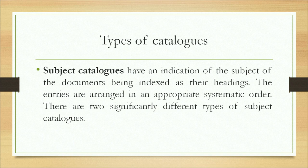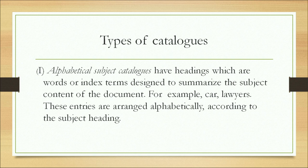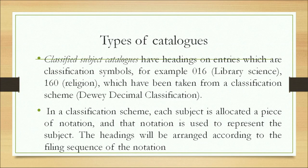There are two significant types of subject catalogs. Alphabetical subject catalogs have headings which are words or index terms designed to summarize the subject content of the document — for example, 'car' or 'lawyers' — arranged alphabetically. Classified subject catalogs have entries with classification symbols as headings. For example, a book on library science will have '016' as its code, taken from a classification scheme such as the Dewey Decimal Classification.